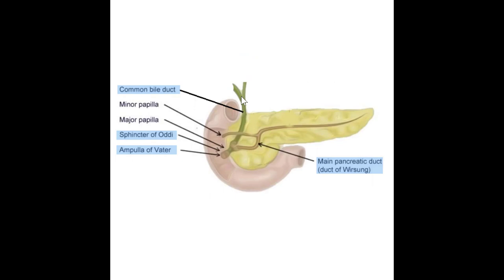In this image, we can see the common bile duct coming down in the pancreatic head, joining up with the duct of Wirsung. They enter through the ampulla of Vater right into the duodenum. The sphincter of Oddi is a muscle that wraps around the bile duct at the ampulla, contracting and relaxing to allow substances to flow in or stopping them when the body doesn't need them at that moment.